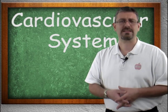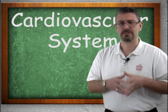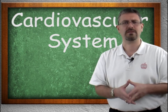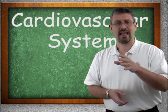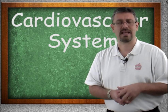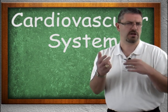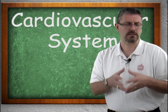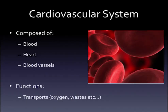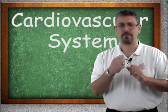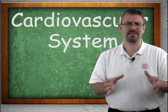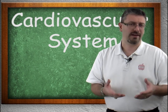The cardiovascular system is another system that's typically broken up into two separate lessons — one covering the heart and another covering the blood vessels and blood. The cardiovascular system is composed of the blood, the heart, and the blood vessels. Its job is to do transport — it transports oxygen, carbon dioxide, and other things. It's the UPS of the body.